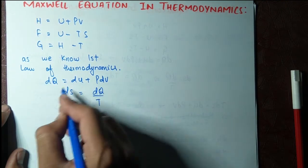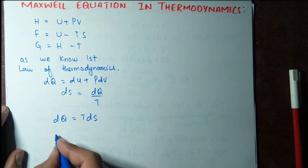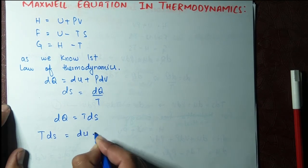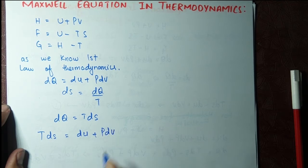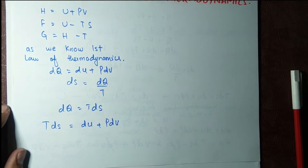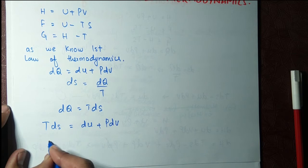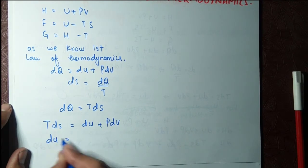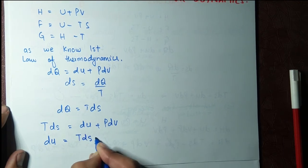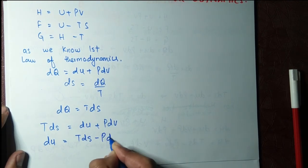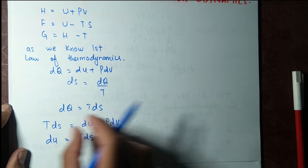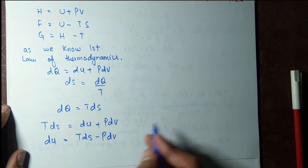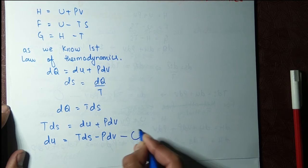Substituting dQ = T dS into the first law gives T dS equals dU plus P dV. Rearranging, we get dU equals T dS minus P dV. We will call this equation number one.